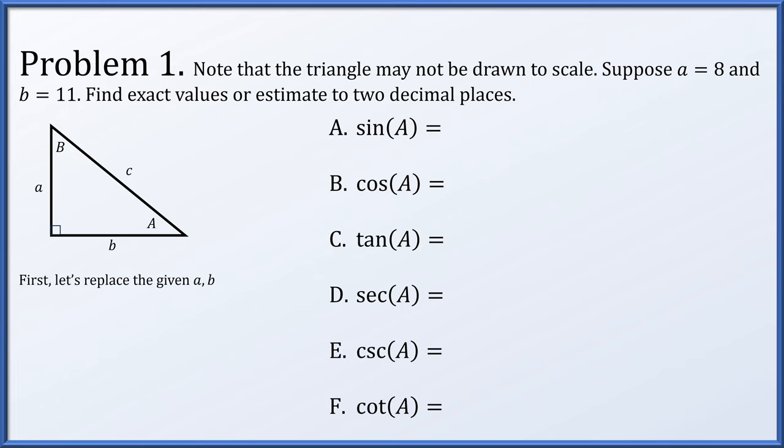So first, in the diagram, let's replace our given side lengths. So we have an 8 across from angle A and an 11 adjacent to it. Now we can use the Pythagorean theorem to find c. So 8 squared plus 11 squared equals c squared. C squared is 185, so c is the positive square root of 185. There we have it.